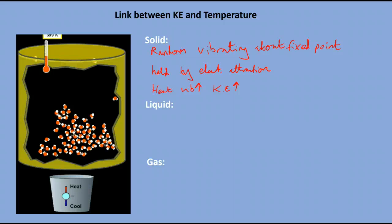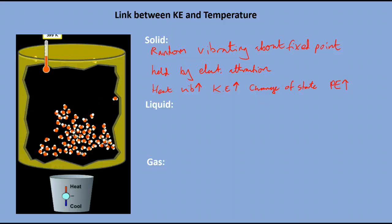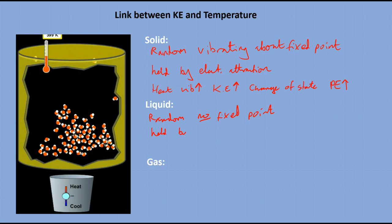When the solid changes state into a liquid, the temperature remains constant, but I'm still putting energy into the system. Where's that energy going? I'm increasing the potential energy of the molecules because they're spreading further apart — since they're attracted to each other electrostatically, increasing the distance increases the potential energy. Molecules in a liquid are still moving randomly but no fixed point is observed. They're still held by electrostatic attraction, but it's much weaker than it was for a solid.